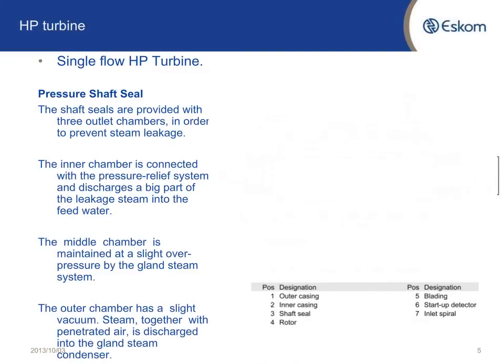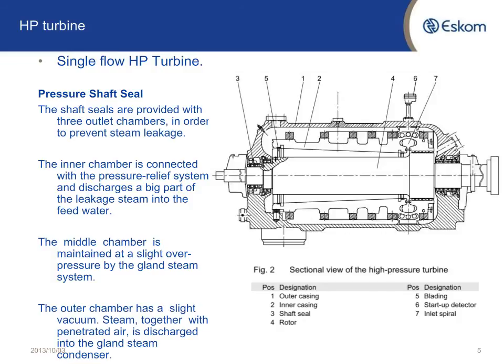This is a cross-section of the HP turbine. As you can see on the right-hand side, number seven is the inlet scroll. And then by the balance piston, there are some seals with leakage on the HP side. On each side of the turbine you can see there are three channels for the gland steam.